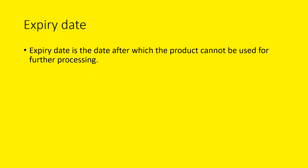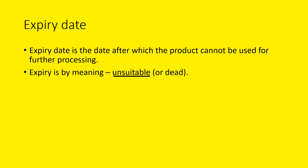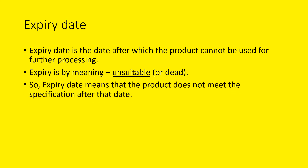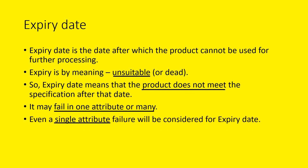Let us try to understand the meaning of each word. We discussed that the expiry date is the date after which the product cannot be used for further processing. By meaning, expiry is dead — it is unsuitable. The expiry date means the product does not meet the specifications after that date; it may fail in one attribute or many. A very important point to note here is that even a single attribute failure will be considered for the expiry date. So among several tests in the list of specifications, even one test failing means the product is considered expired, and the material cannot be used.